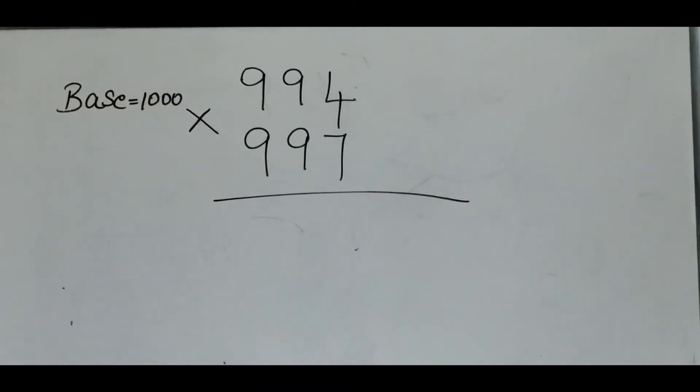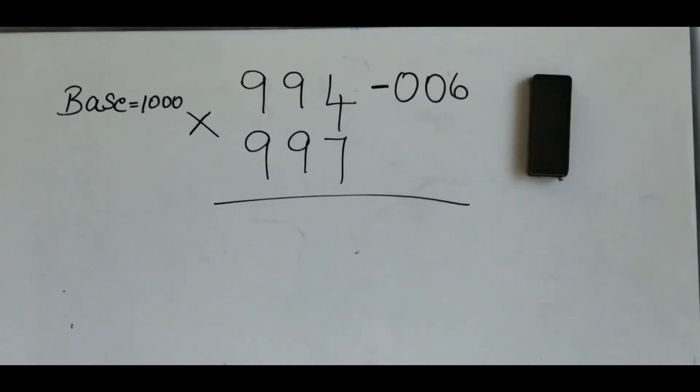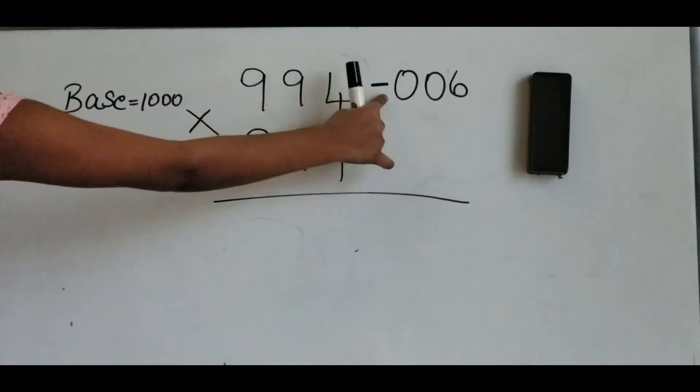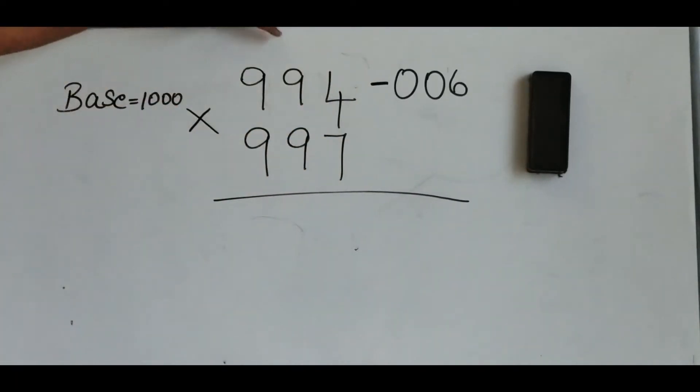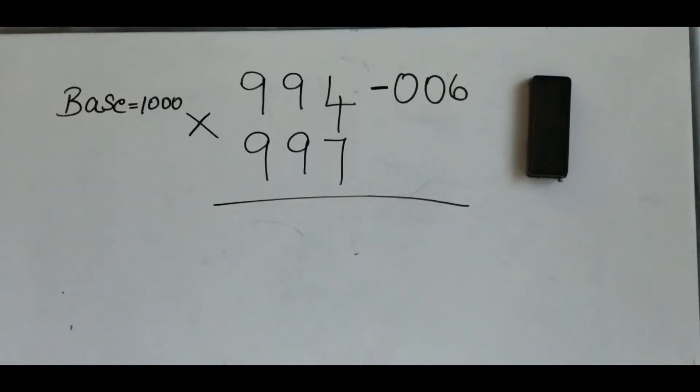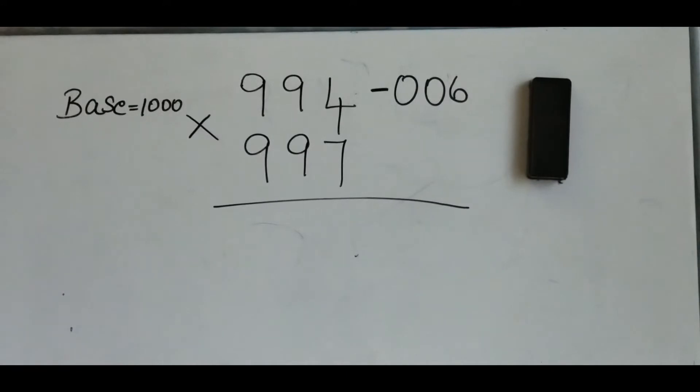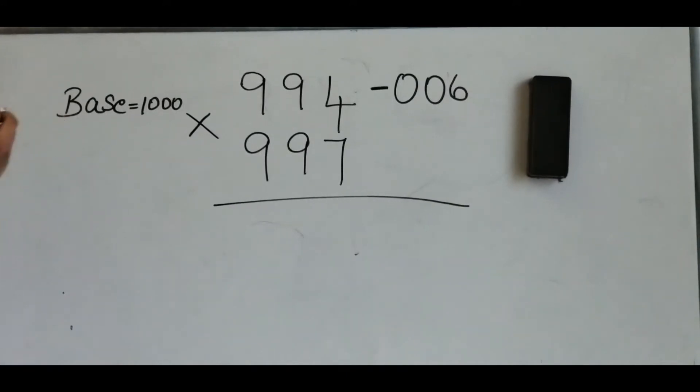So we write 6 as 006. We put a subtraction symbol in the middle to show that 994 is less than 1000. The complement of 997 is 003.